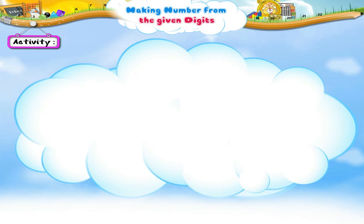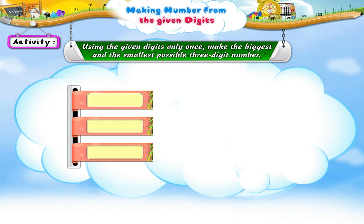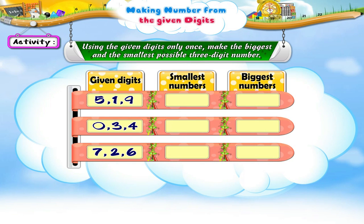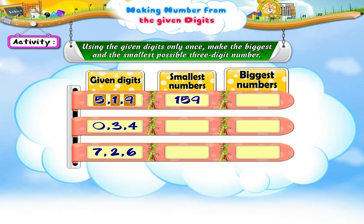Let us do an activity. Using the given digits only once, make the biggest and the smallest possible three-digit number. Using five, one, nine — the smallest number made is one hundred and fifty-nine, and the biggest number is nine hundred and fifty-one.